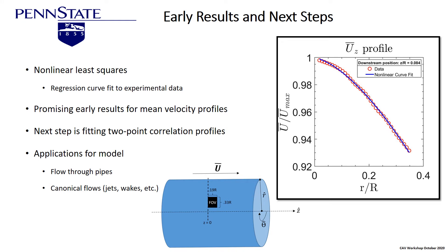We're looking first at the mean flow. The data is very smooth — taken with particle image velocimetry — and you can see a maximum non-dimensional velocity of one at the center, dropping off slightly out to about 35% of the radius from the centerline. That's the area of flow we're interested in right now. We'll be looking at the turbulence and doing curve fits to this data. Applications include flow through pipes and canonical symmetric flows like jets and wakes.